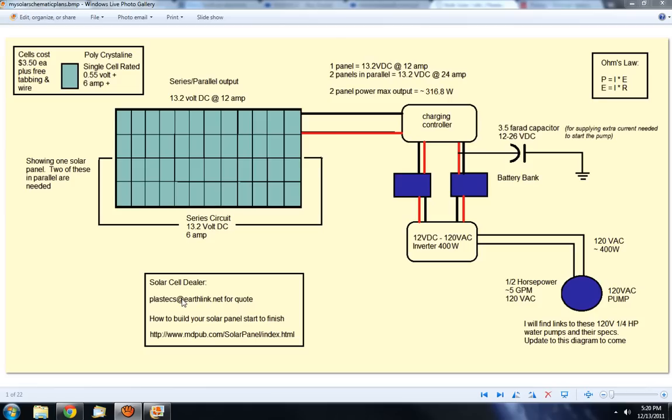What I have here is when I make my panels, I will take 48 cells to create one panel. The first 24 will be wired in series to give me 13.2 volts at 6 amps.